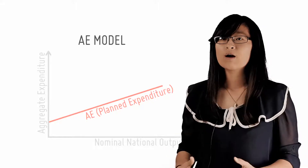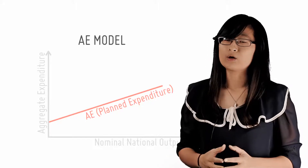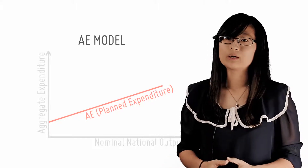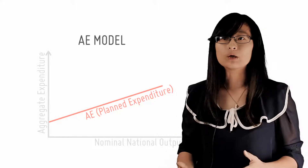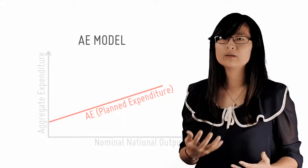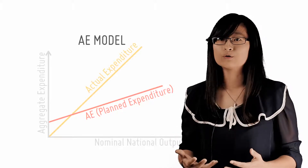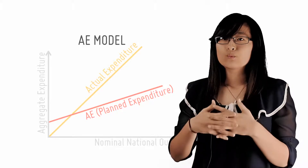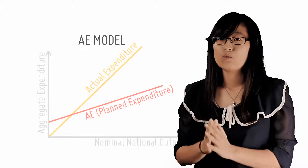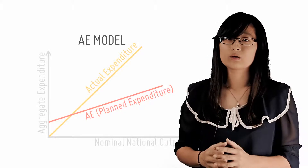But our graph only has one line on it at the moment, and there are no intersection points, so how can we find this equilibrium level? We clearly need to add one more line to the graph.